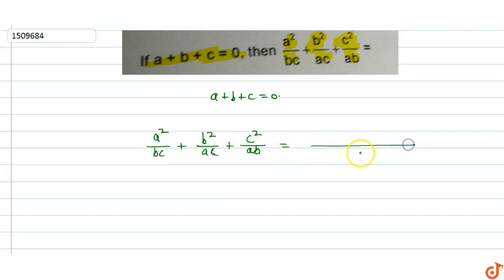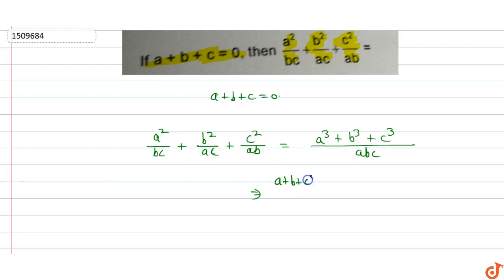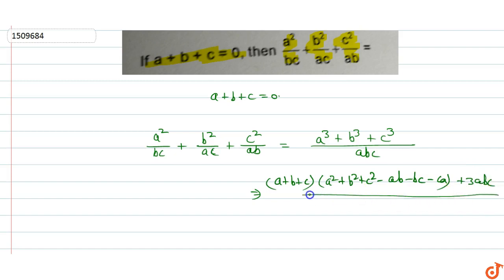We apply the algebraic identity: a cube plus b cube plus c cube equals a plus b plus c into a square plus b square plus c square minus ab minus bc minus ca, plus three times abc. This whole expression is then divided by abc.